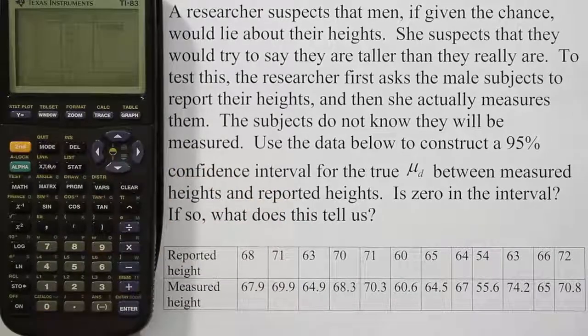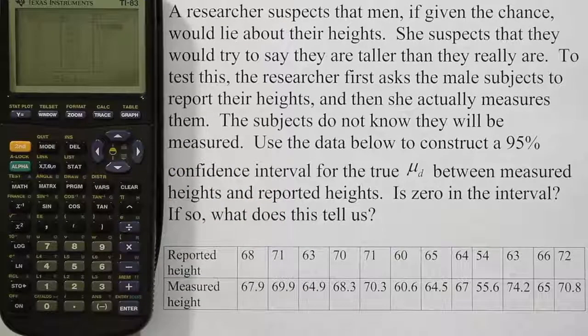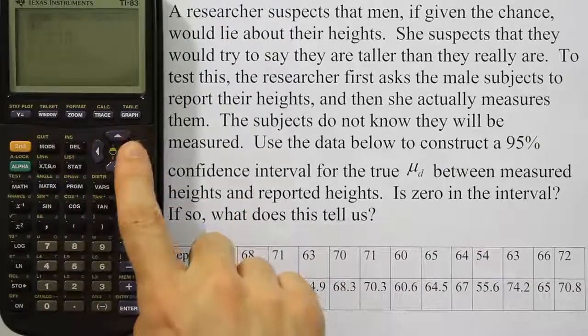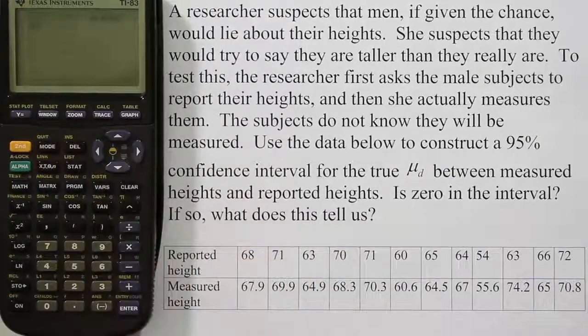At that point, what we want to do is to run the confidence interval procedure. So we're going to hit the STAT key one more time. Press STAT. And you're going to arrow over to where you see the TESTS menu.